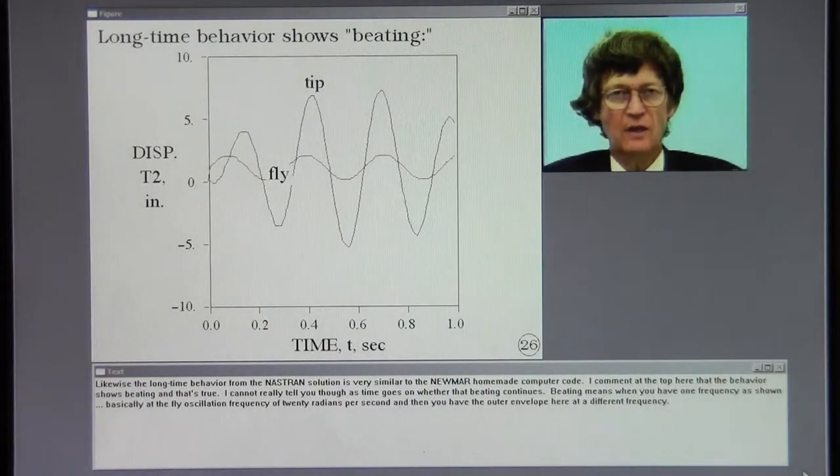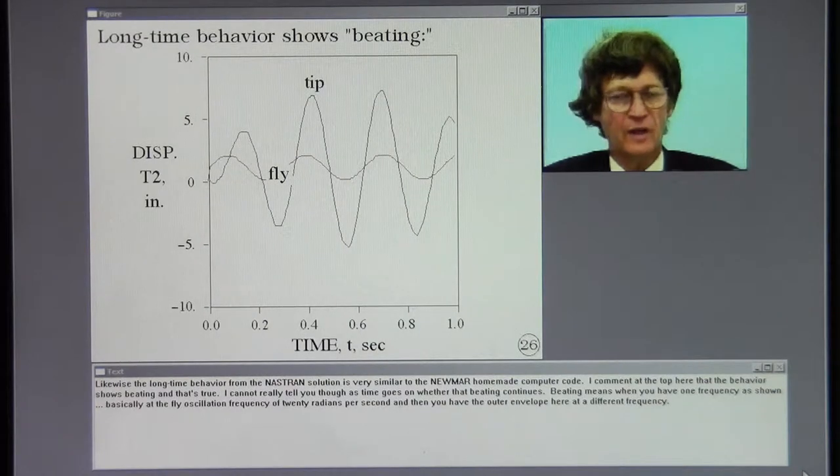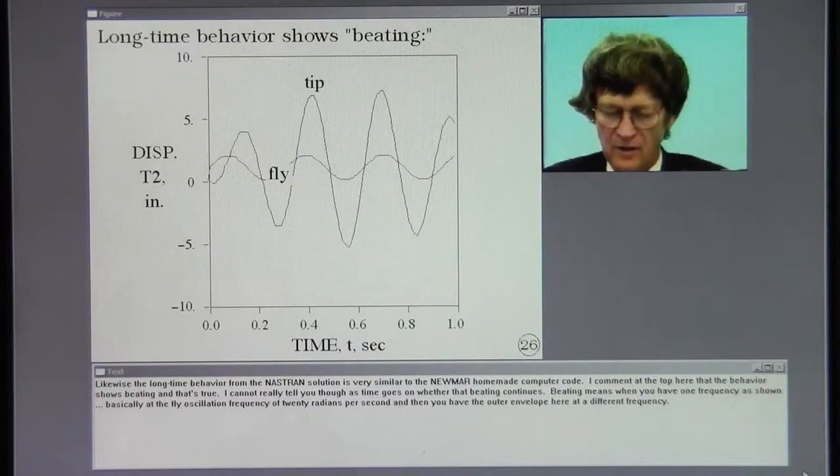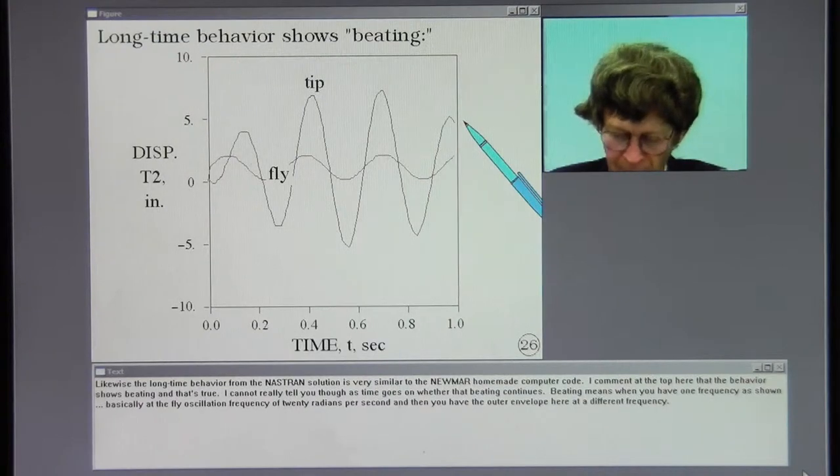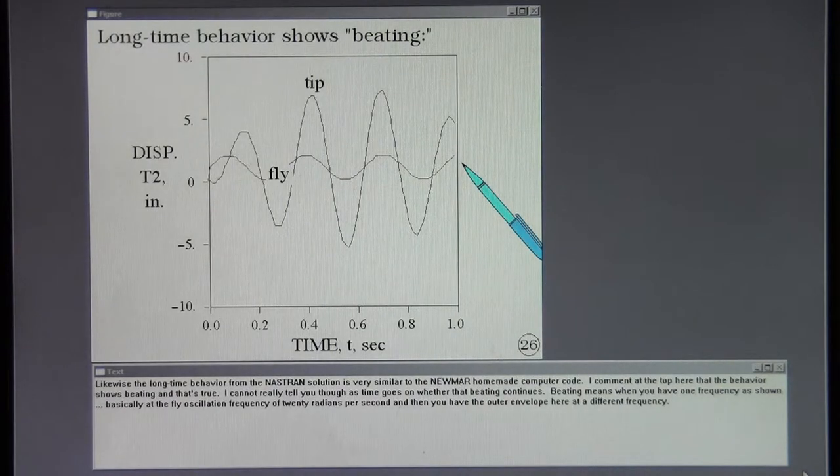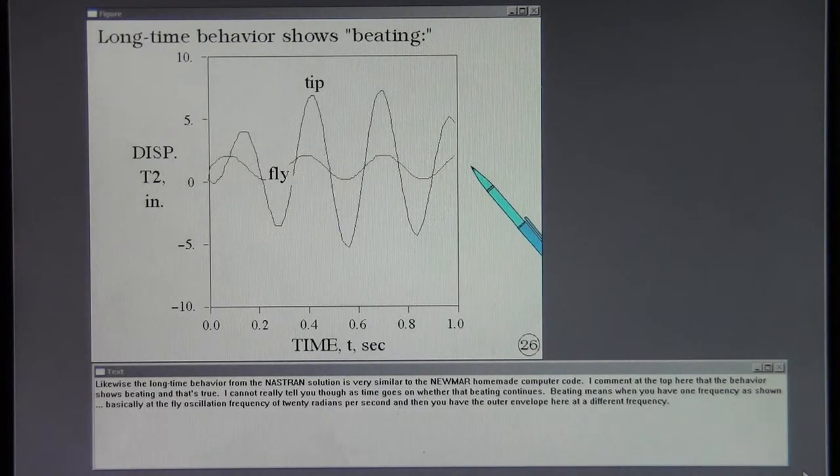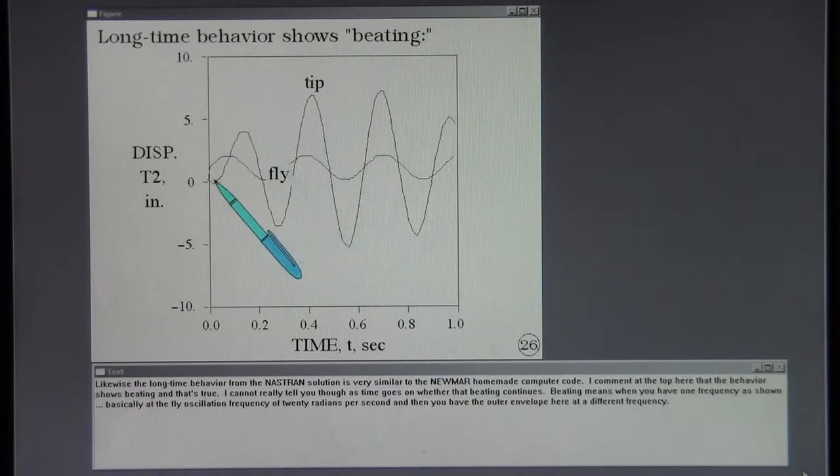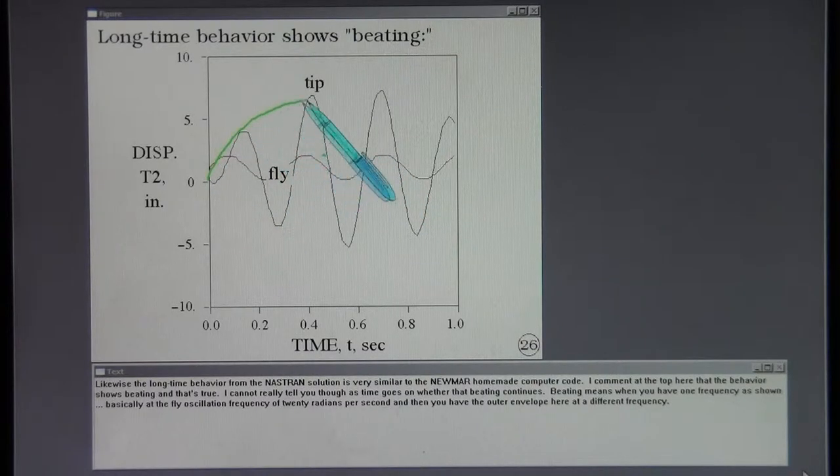Likewise, the long time behavior from the Nastran solution is very similar to the Newmark homemade computer code. I comment at the top here that the behavior shows beating and that's true. I cannot really tell you though as time goes on whether that beating continues. Beating means when you have one frequency, basically at the fly oscillation frequency of 20 radians per second, and then you have the outer envelope here at a different frequency.